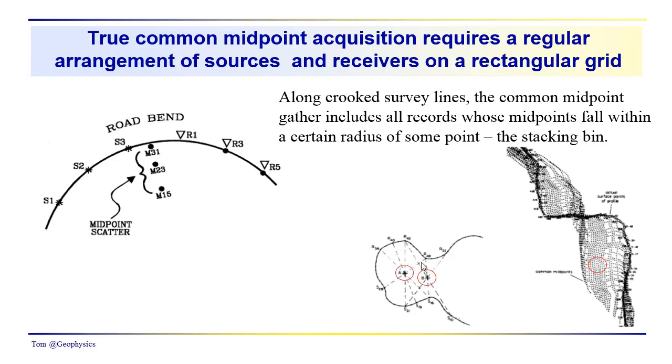Often when you're collecting common midpoint data, you will bin it. Bin means you will throw all the traces that occur within a certain radius of a given point into the gather. What we've been calling the common midpoint gather is not actually a common midpoint gather because of the geometry.